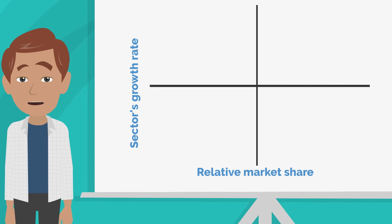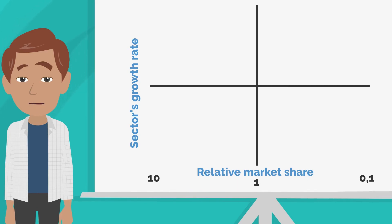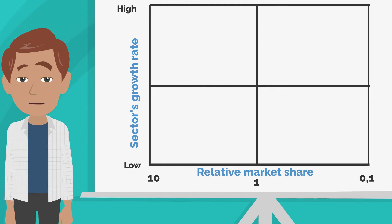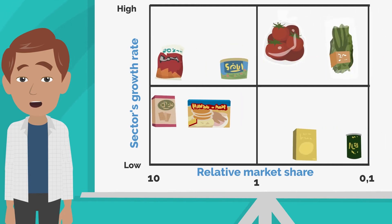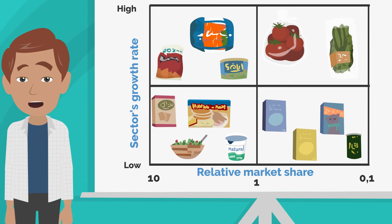How do we estimate the range of values on individual axes? The value of the relative market share is assumed to be constant and follows the division from one tenth of the share — that is 10% of sales of the main competitor — through one, meaning the same as the main competitor, and up to 10, marking 10 times more sales than the main competitor. The vertical axis, which reflects the market growth rate, should be tailored to the specificity of a given sector. For example, the internet technology sector has a much faster growth rate than the publishing industry. This way, we create a matrix on which we allocate individual elements of the company's offer. Each of them should be analyzed in terms of the aforementioned market share in relation to the largest competitor and the growth rate of the sector in which it functions.